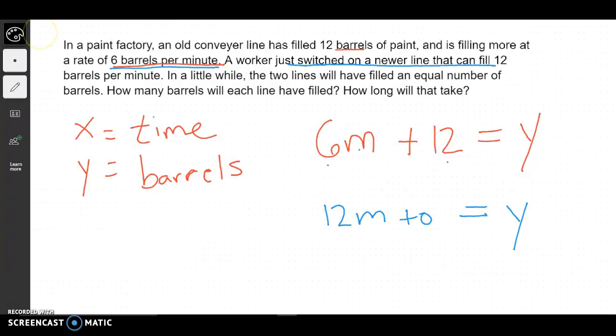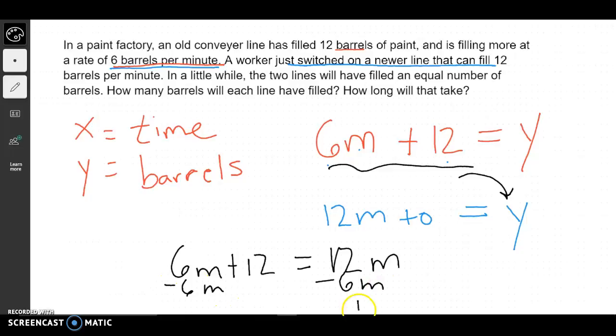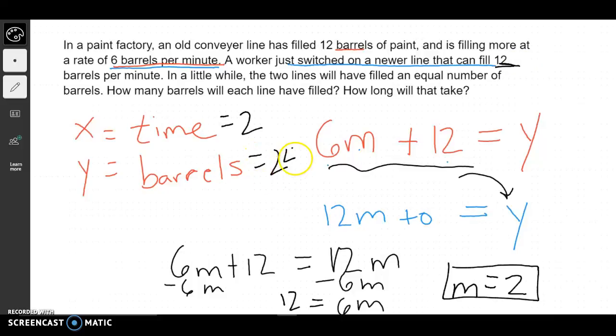Well, this to me looks like a substitution problem, because we don't have any fractions and we have a y solved for. So I'm going to take this and replace it with that y down there. I'm going to have 6m plus 12 equals 12m. I'll subtract 6m so the m's are on the same side, and I'll get 6m equals 12. That means my number of minutes should equal 2, so my time is 2. Well, if we know this is 2 minutes and this fills 12 barrels per minute, we know that's going to be a total of 24 barrels.